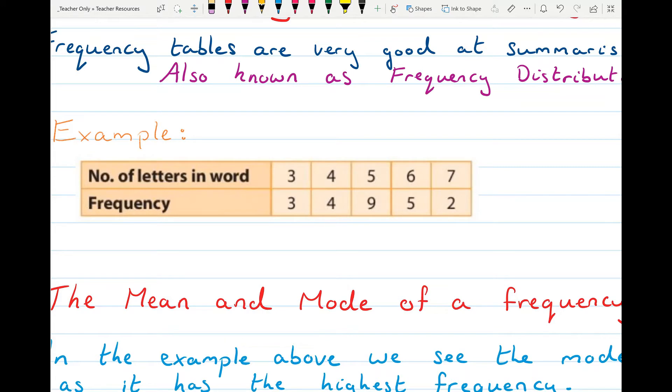So there were three words with three letters, there were four words with four letters, there were nine words with five letters, there were five words with six letters and there were two words with seven letters.